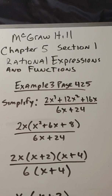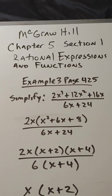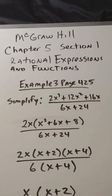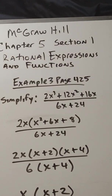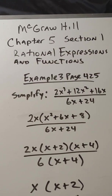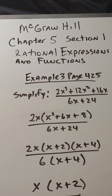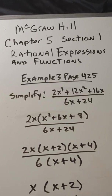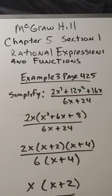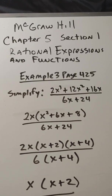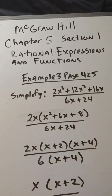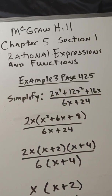This is McGraw-Hill, Chapter 5, Section 1: Rational Expressions and Functions. One of the most important techniques you're going to have to use for this whole chapter is factoring. We have five factoring rules and we'll be dealing with exponent rules as well.